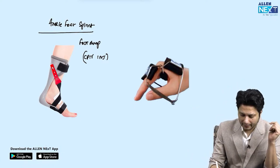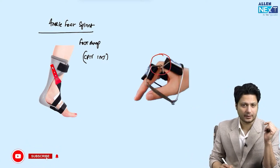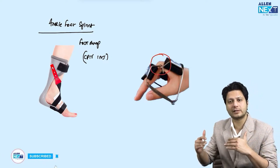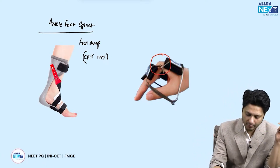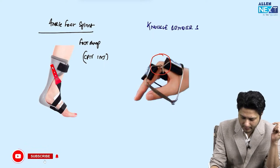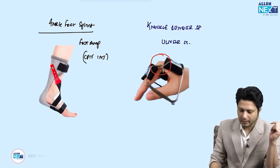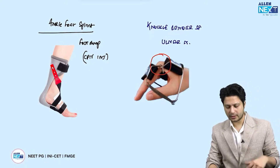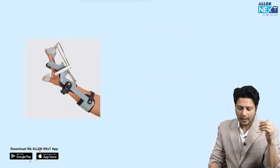If you can see that the knuckles are bent — the metacarpophalangeal joints are flexed and immobilized — the name of that splint is the knuckle bender splint. The knuckle bender splint is used in the management of ulnar nerve injury.